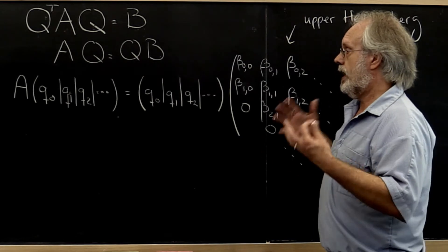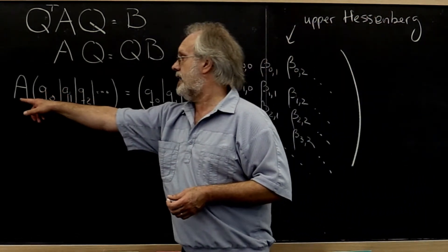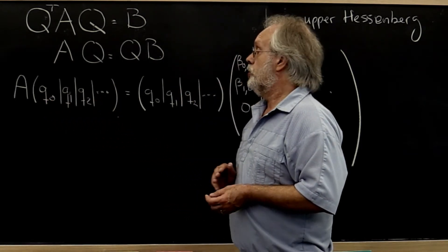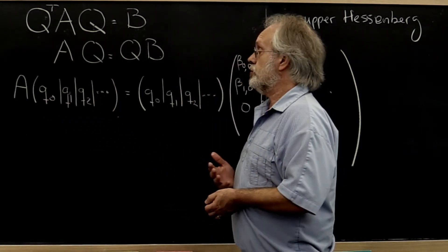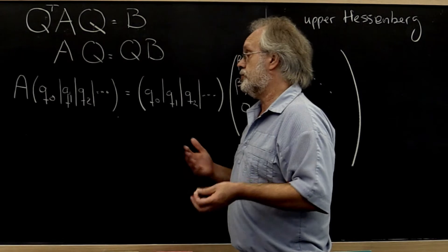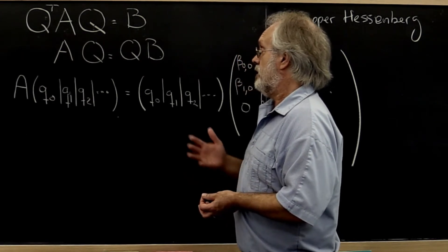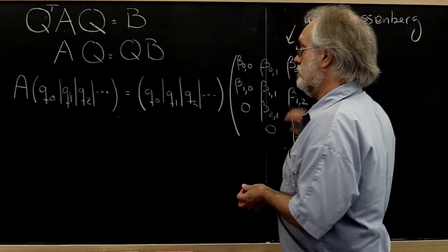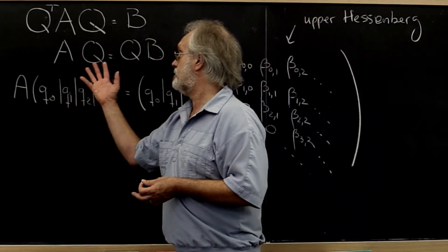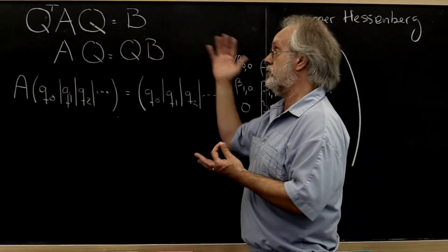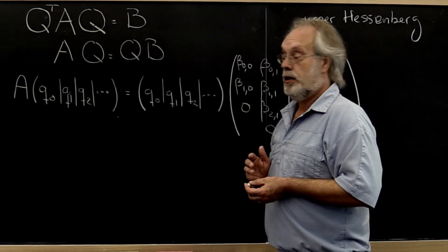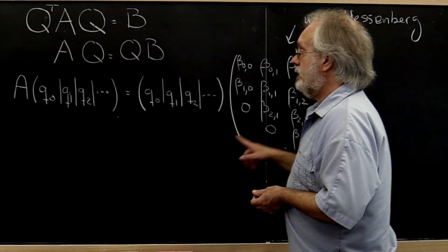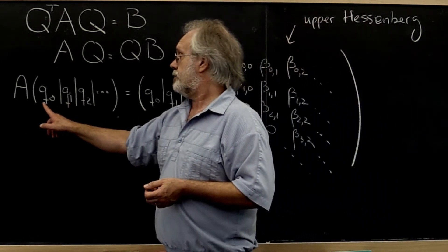So any time you have any matrix A, in this case real valued, a unitary matrix that in this case is also real valued and therefore we should really call an orthogonal matrix, then if Q transpose A times Q is equal to an upper Hessenberg matrix or equivalently A times Q is equal to Q times B where B is upper Hessenberg, then matrix B is completely determined by its first column.